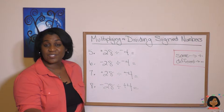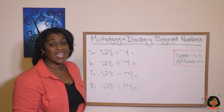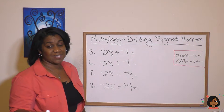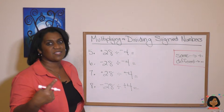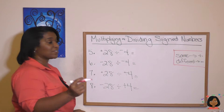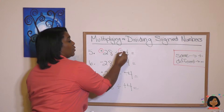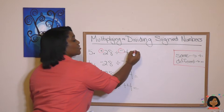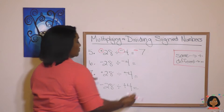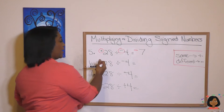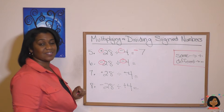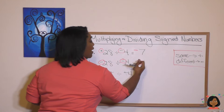Let's talk about division now. Turns out the same rules apply. If they have the same signs, the answer is going to be positive. If they have different signs, the answer is going to be negative. Positive 28 divided by a negative four — we have different signs — so our answer is going to be a negative seven. Negative 28 divided by a negative four, we have the same sign, so our answer is going to be a positive seven.